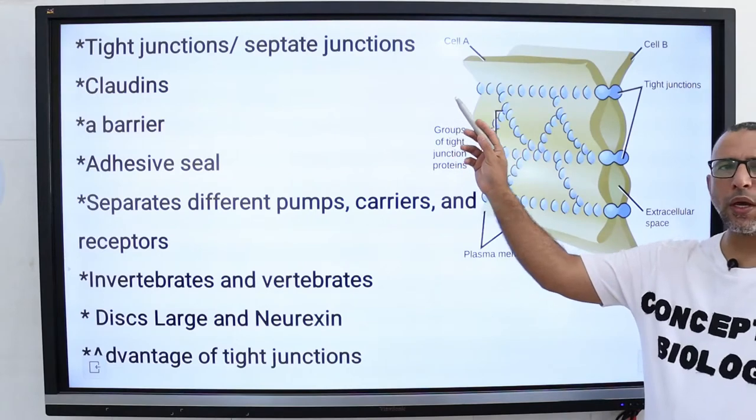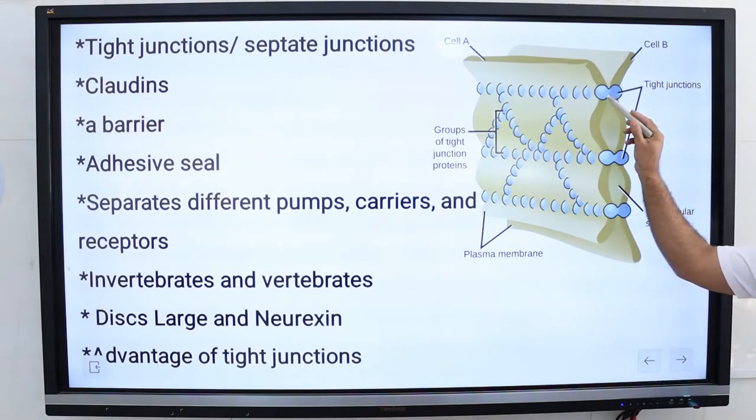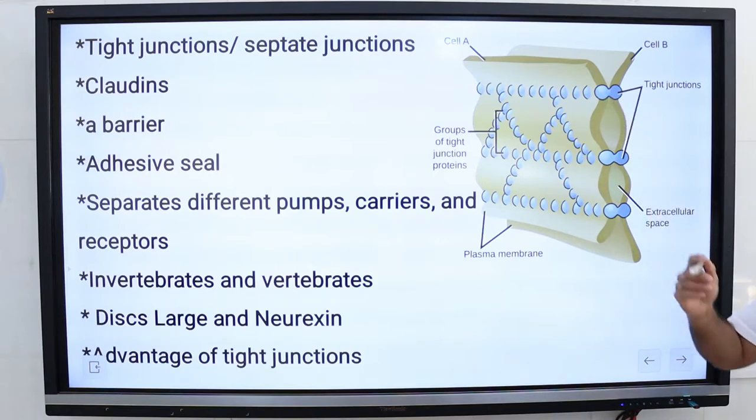Tight junctions are also known as septate junctions. There is a transmembrane protein called claudins that joins the plasma membrane bilayer of two cells to create a barrier that limits the diffusion of ions and solutes between the cells.